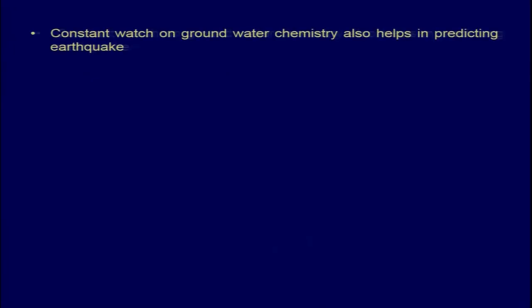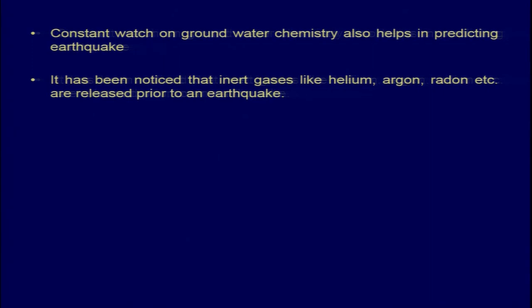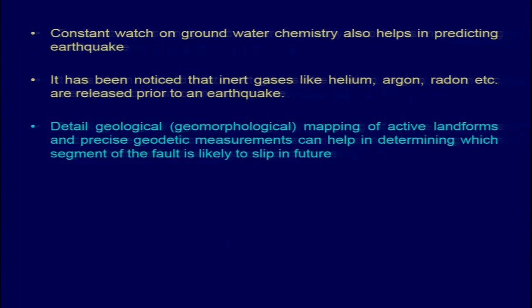Constant monitoring of groundwater chemistry is another parameter which helps in predicting earthquakes. It has been noticed that inert gases like helium, argon, and radon are released prior to an earthquake. Detailed geological and geomorphological mapping of active landforms along with precise geodetic measurements can help in determining which segment of a fault will rupture or slip in the future.